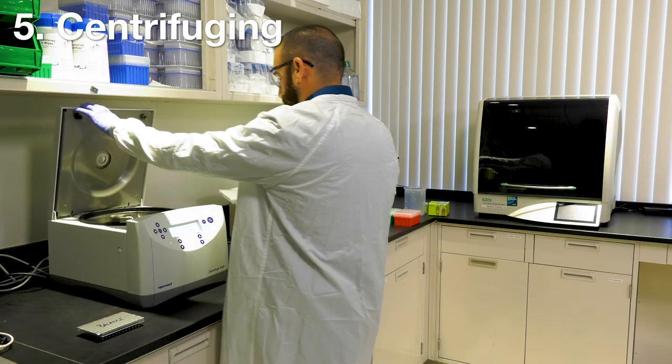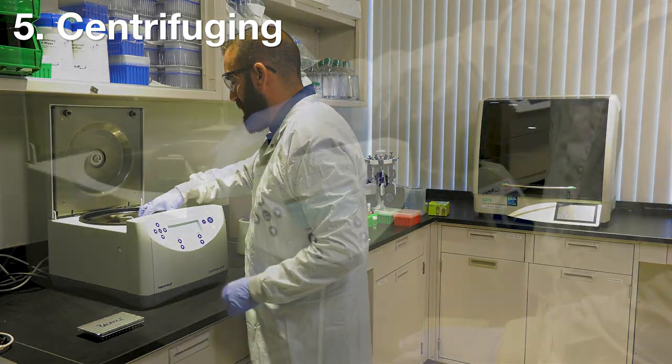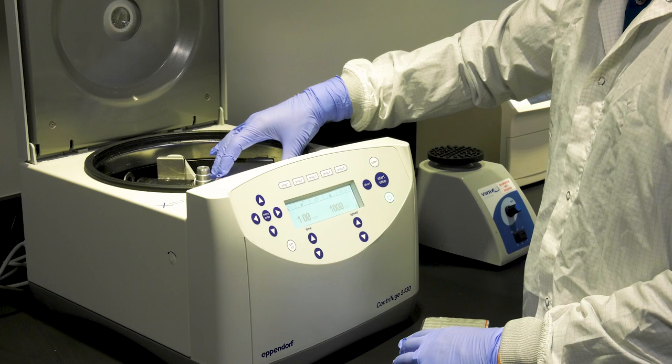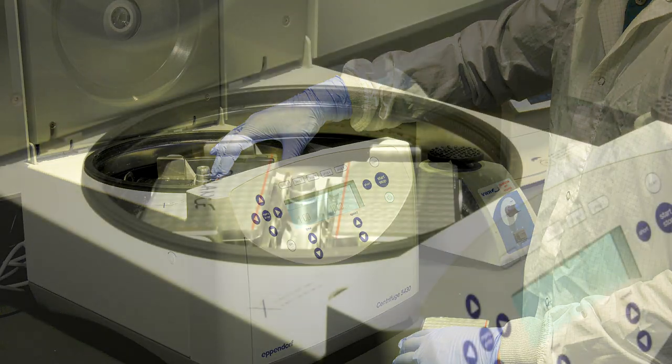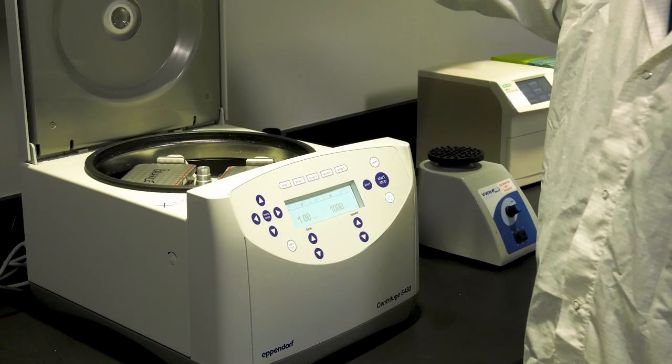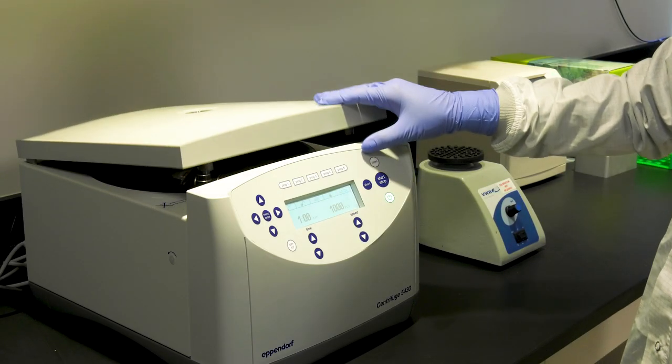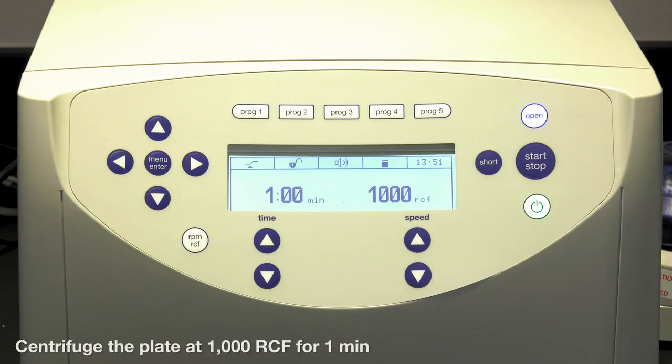Next, place the plate in a centrifuge to make sure the 1X reaction mixes are all at the bottom of the wells for the automated droplet generator to properly pipette them. Add a balance plate and begin centrifugation. We recommend 1000 RCF for one minute.